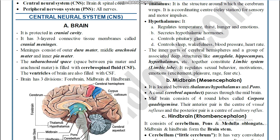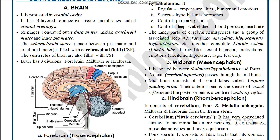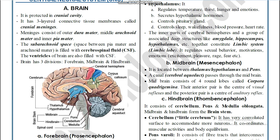The hypothalamus is located below the thalamus. It regulates body temperature, thirst, hunger, and emotions. It also secretes hypothalamic hormones and controls the pituitary gland, acting as an endocrine gland. Additionally, it controls sleep, wakefulness, blood pressure, and heart rate.